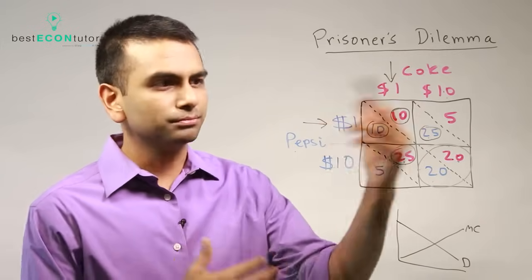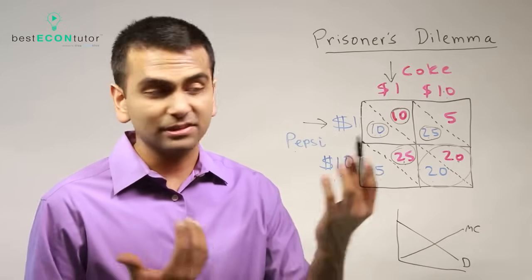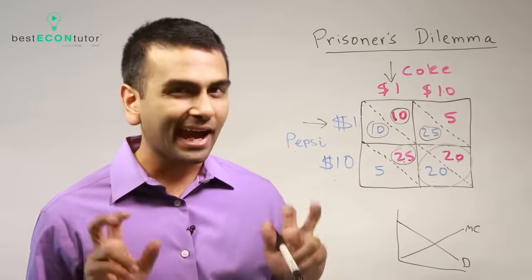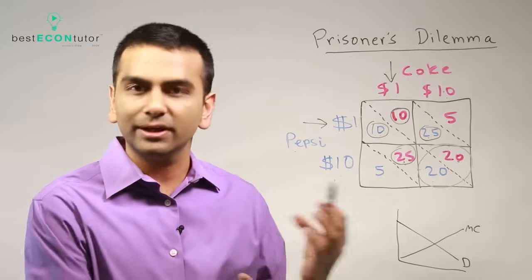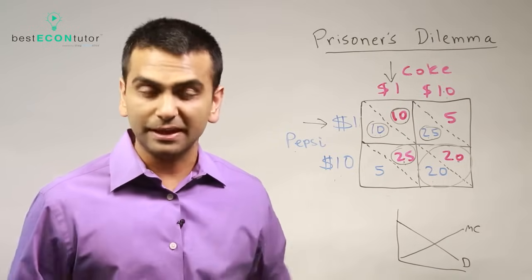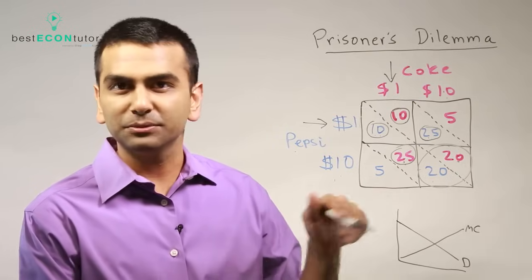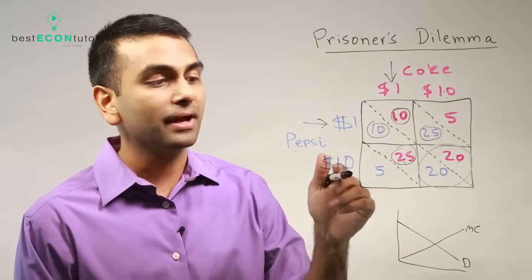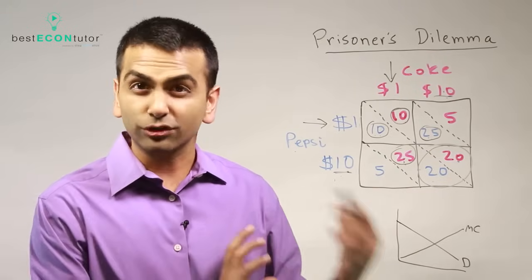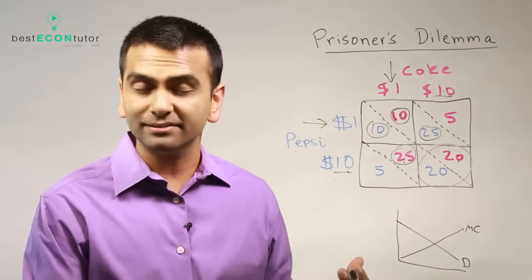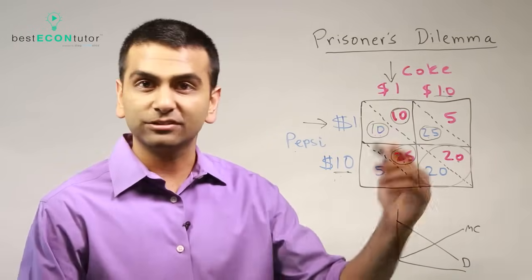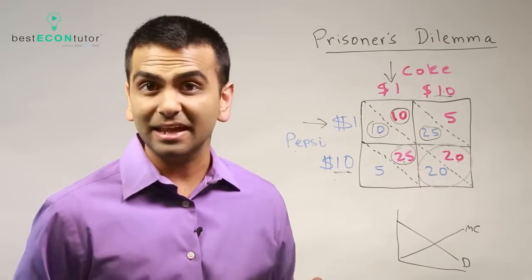Two companies in a prisoner's dilemma could try to tacitly collude - silently trying to coordinate with each other. However, the government has made it illegal to actually do that. You can't have a contract saying Pepsi will sell at $10 a can and Coke will do the same thing. Those contracts are illegal - that's what antitrust laws refer to. Antitrust basically makes colluding or cartels, as they're sometimes called, illegal.